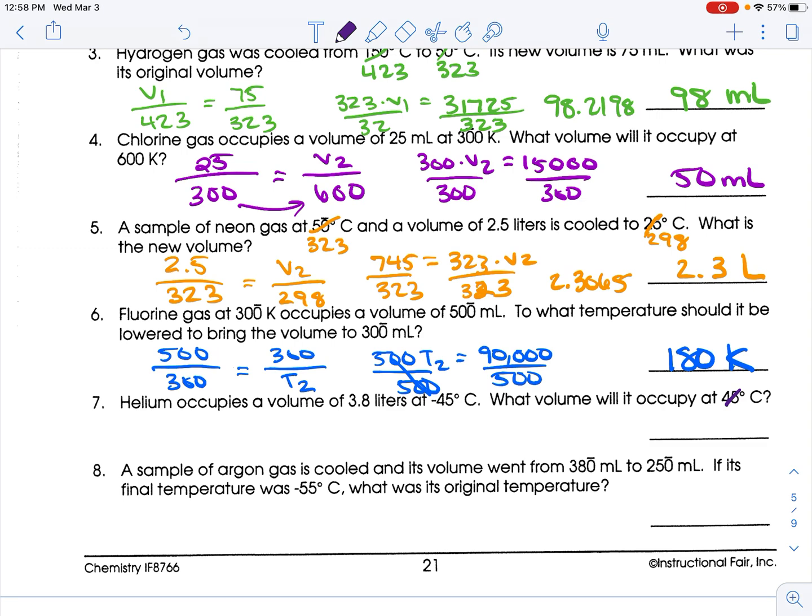45 Celsius goes away. We make it 318 Kelvin. Negative 45 plus 273 is 228 Kelvin. So 3.8 over 228 equals, I don't know, over 318. So 228 times V2 equals 3.8 times 318, which is 1208.4. Divide both sides by 228, and you get 5.3, which is the right sig figs, liters.